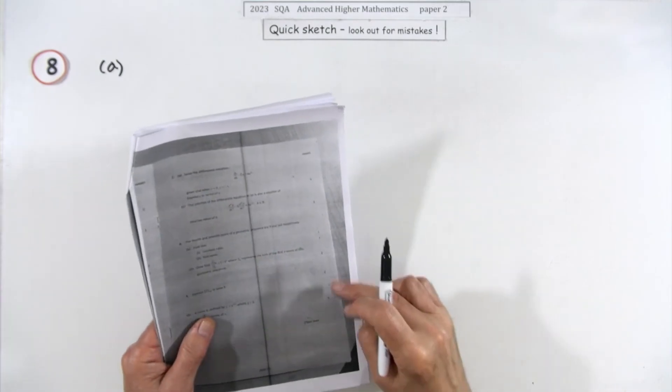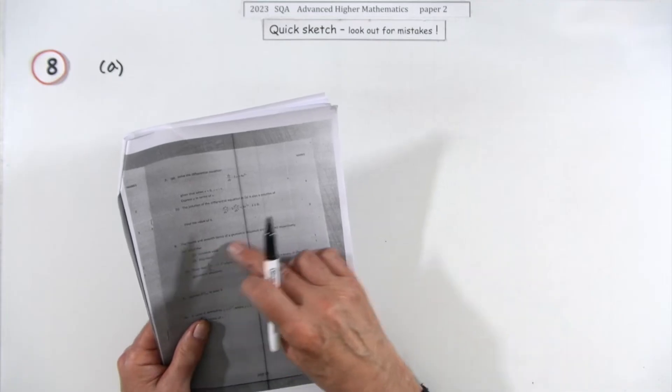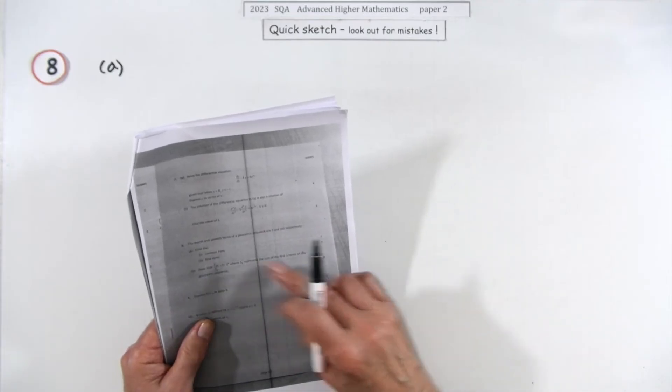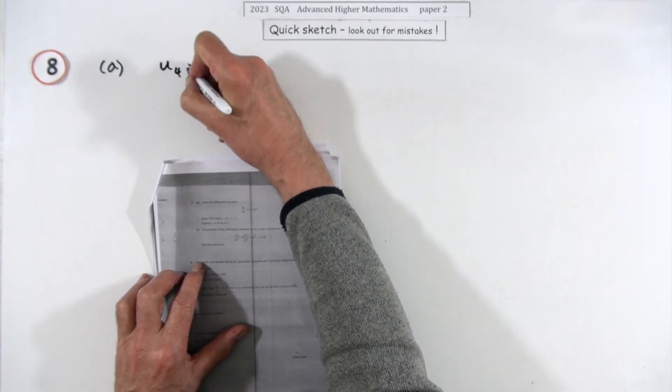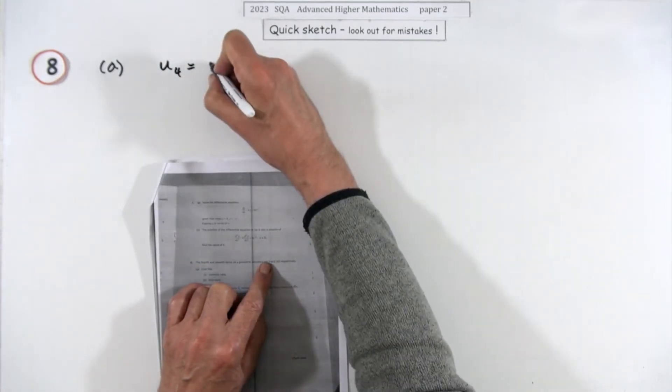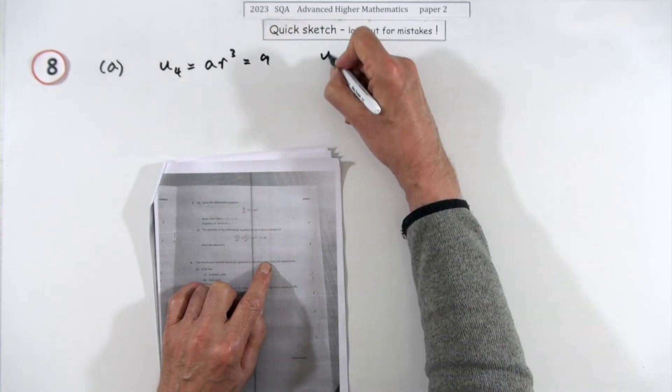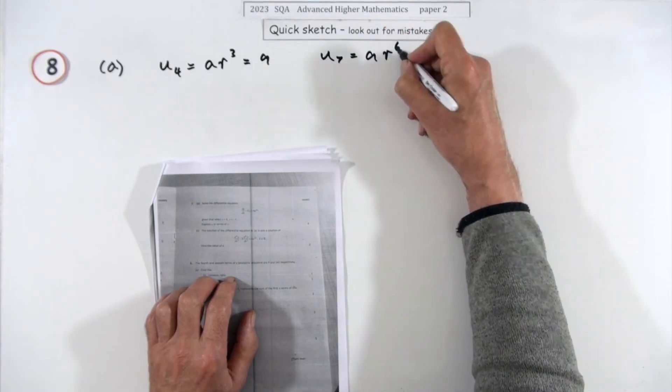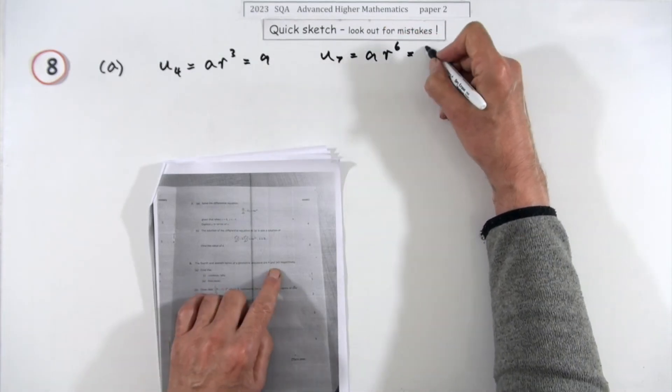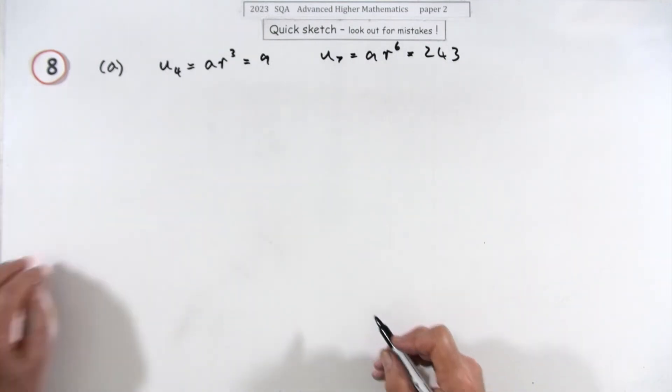So number eight then, from paper two, the 2023 Advanced Higher Maths. Geometric sequence. In the first part, it tells you the fourth term, so u4 is 9, so that'll be ar cubed is equal to 9. And the seventh term, which will be the first term multiplied by the common ratio six times, is equal to 243. If that's the case, what is the common ratio and what is the first term?